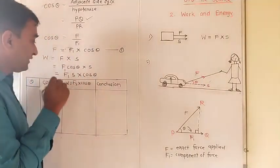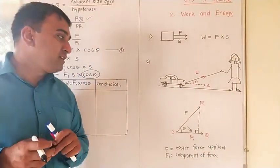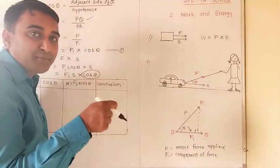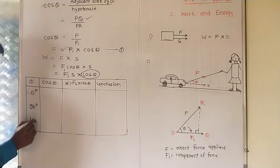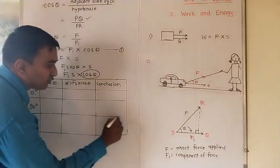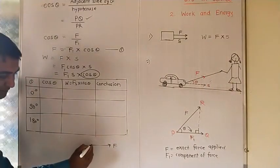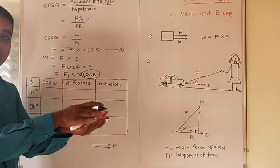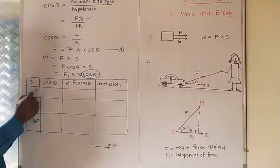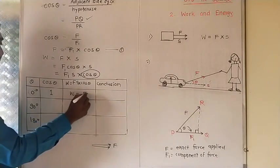Now let's consider three cases. First, when theta = 0°: if force and displacement are in the same direction, the two lines are overlapping — that means angle is zero degrees. Cos 0° = 1. So W = F × S × 1 = F × S. This is positive work. For example, you are pushing a trolley forward and the trolley also moves forward — that is positive work done.